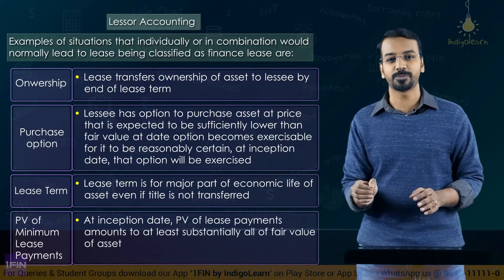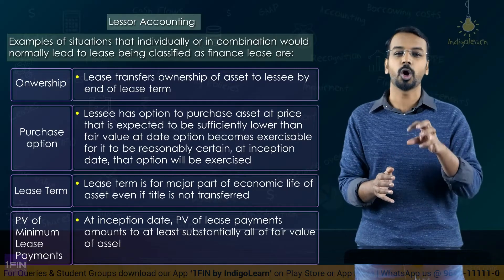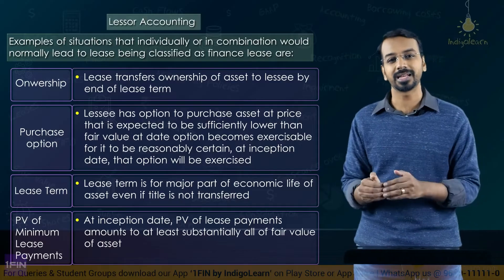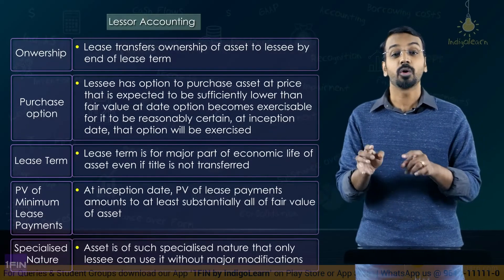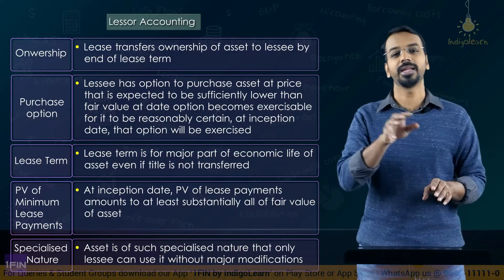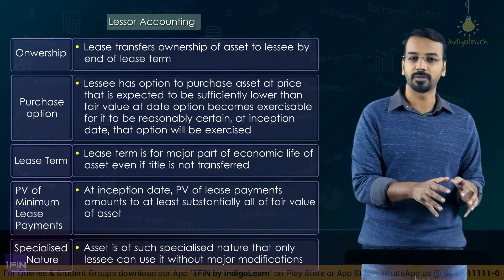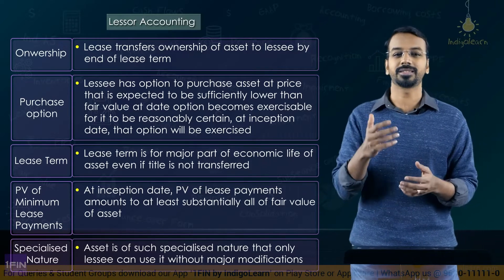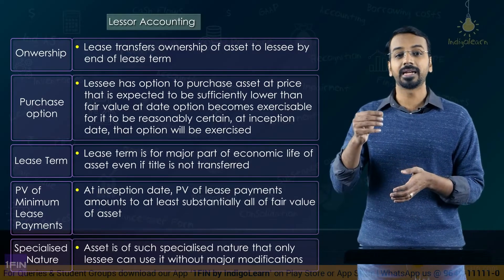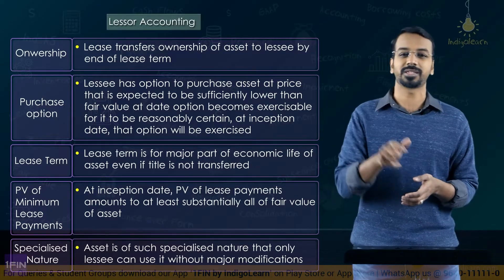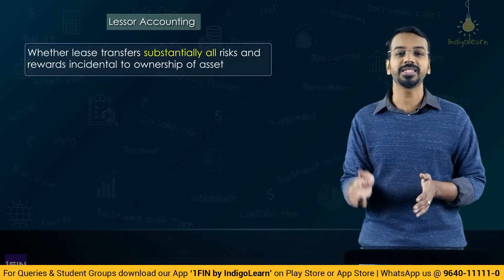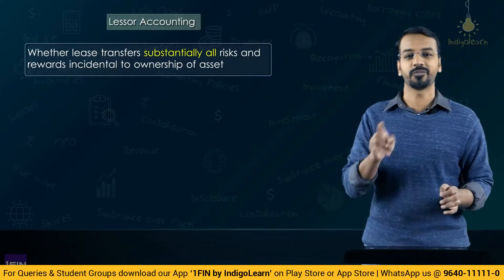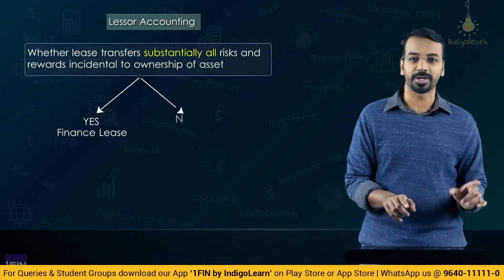Fourth, if the present value of lease payments is substantially all of the fair value of the underlying asset, it is a finance lease. Fifth, if it is a specialized asset that only the lessee can use and anybody else would need to make substantial modifications, it is also a finance lease. You have to look at all these conditions with a combined understanding to determine whether substantially all the risks and rewards incidental to ownership have been transferred. If yes, it is a finance lease; otherwise, it is an operating lease.